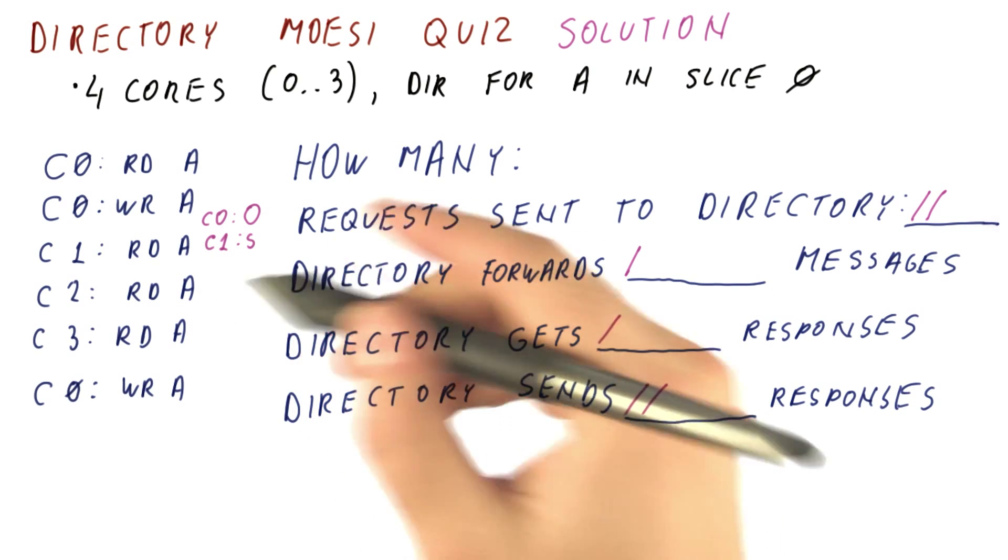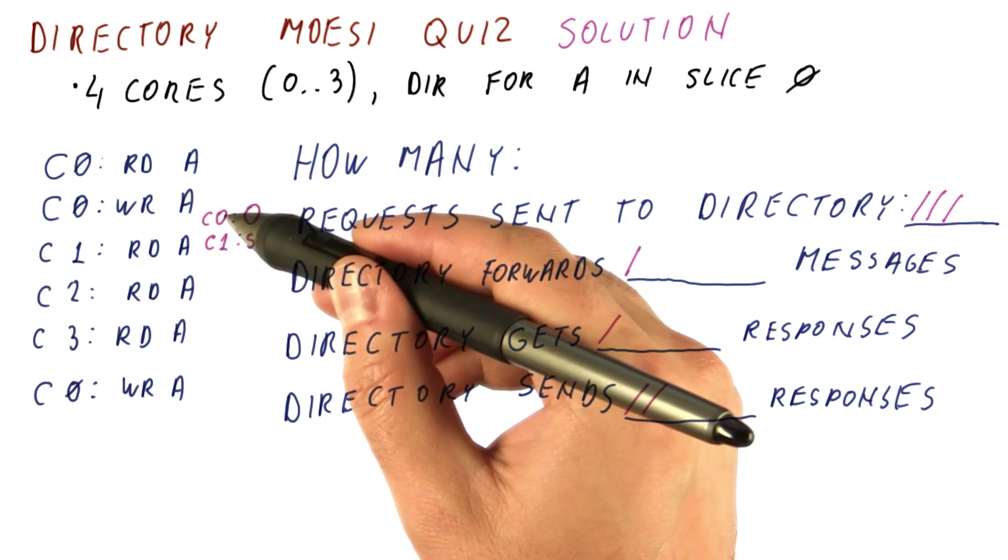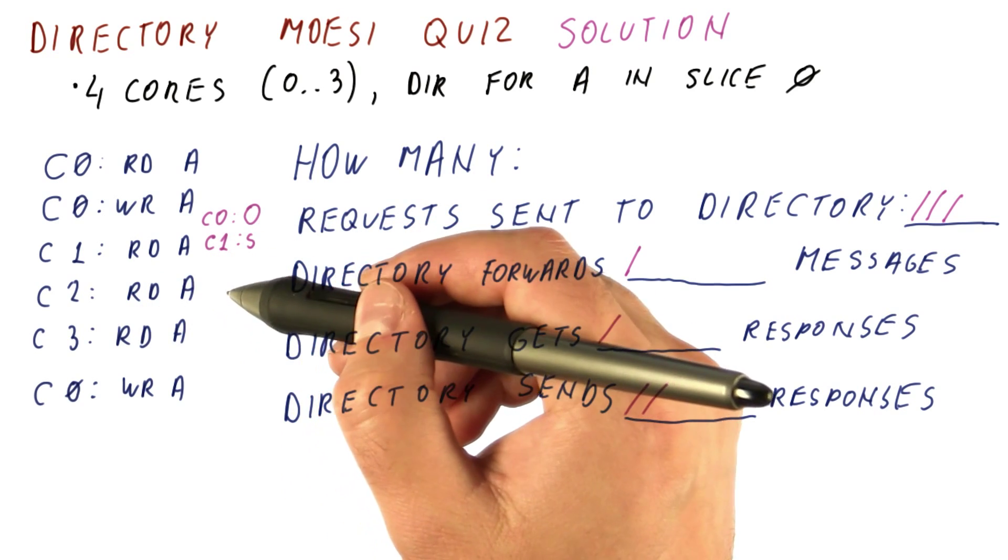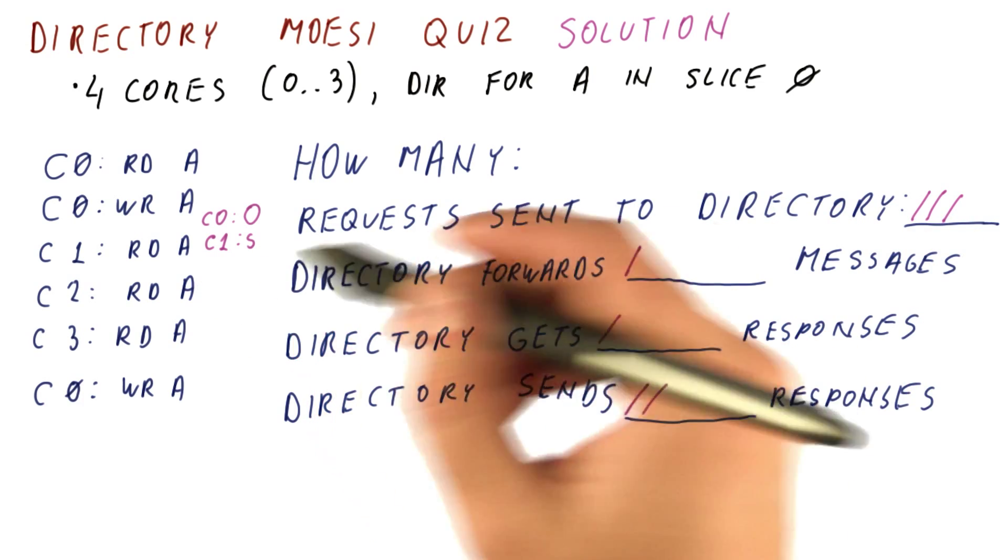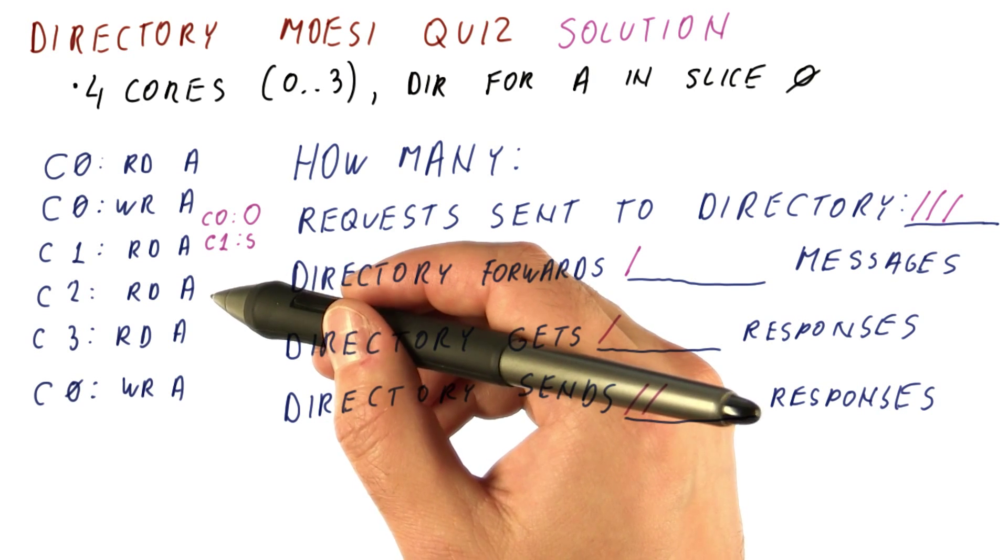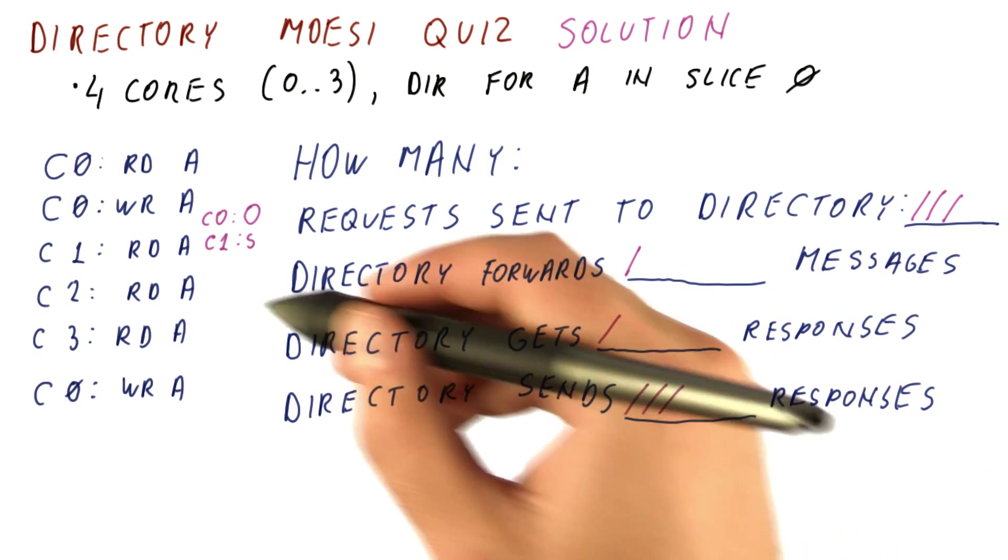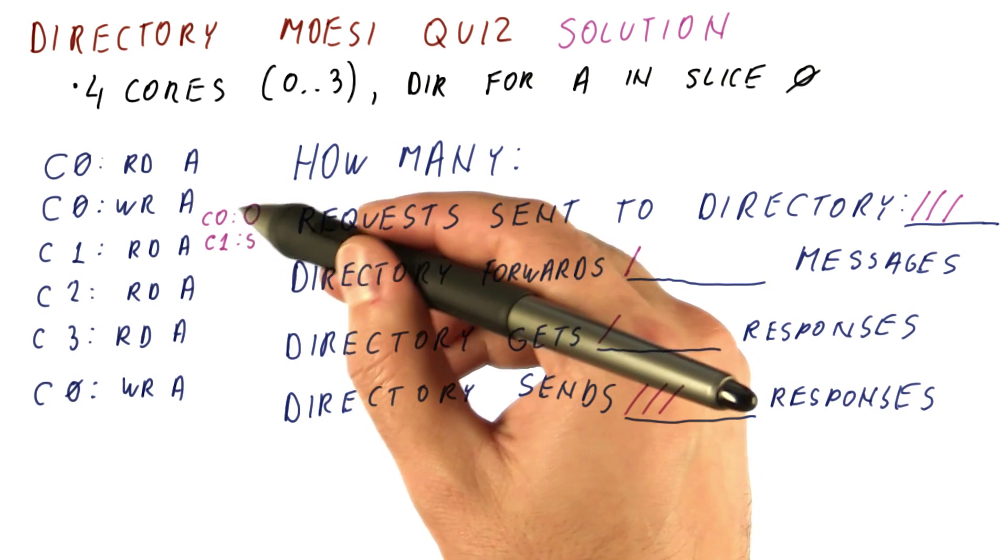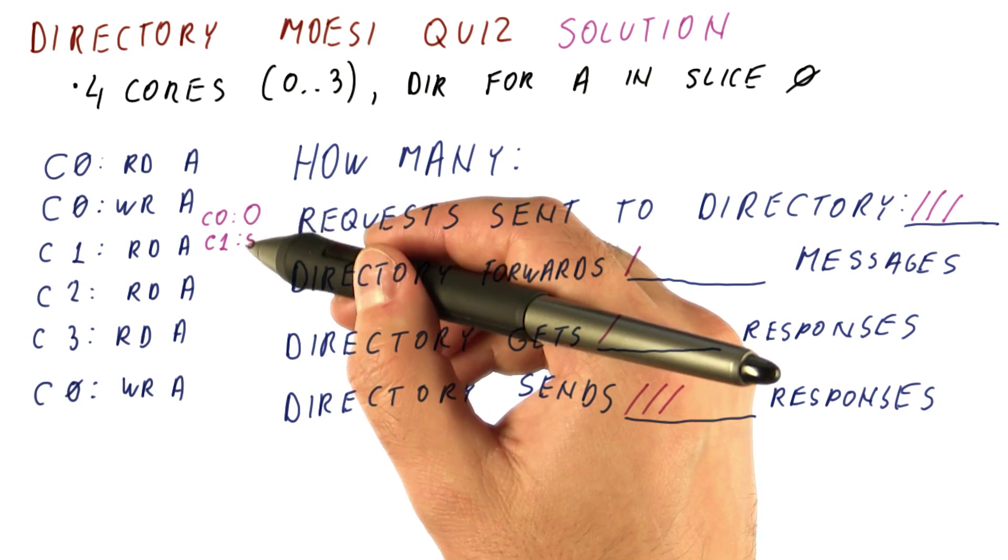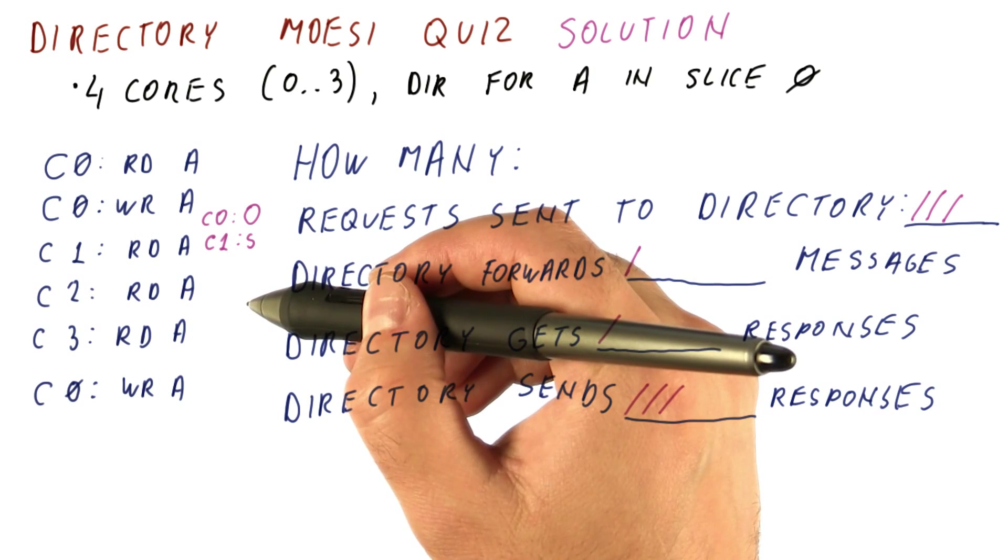Core 2 now tries to read, sends a request to the directory. The directory, if it has only the state that we have seen on the previous segments, does not know who is the owner of this block, but it doesn't need to send anything. So it gets to memory. The directory here doesn't send any messages forwarded because it no longer sees the block in the dirty state. So it doesn't forward anything, doesn't get responses, just sends a response back to core 2. Note that here we're unable to benefit from the owned state simply because the directory doesn't know to ask core 0 to provide the data. With a fancier directory we would be able to do that, but not with a directory that only tracks presence and dirtiness.